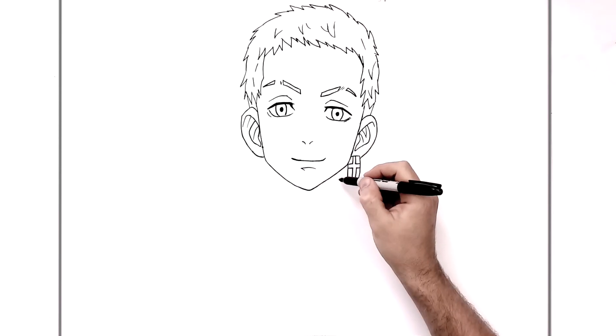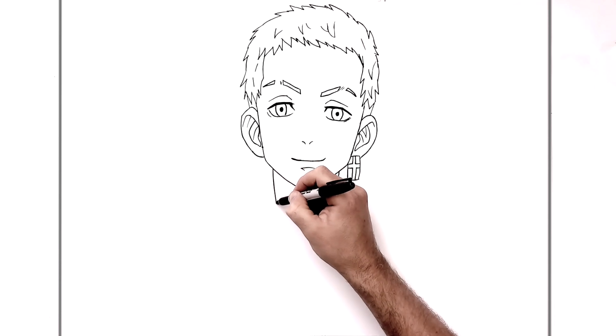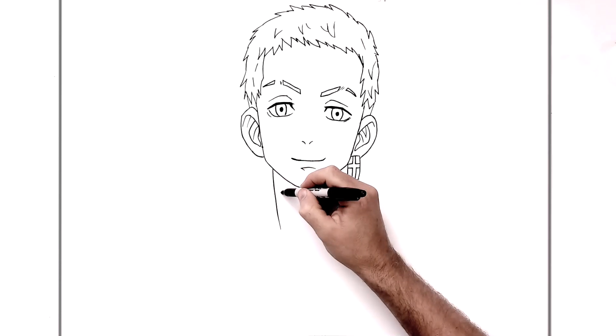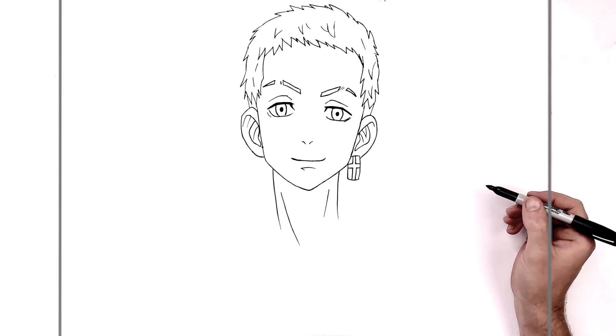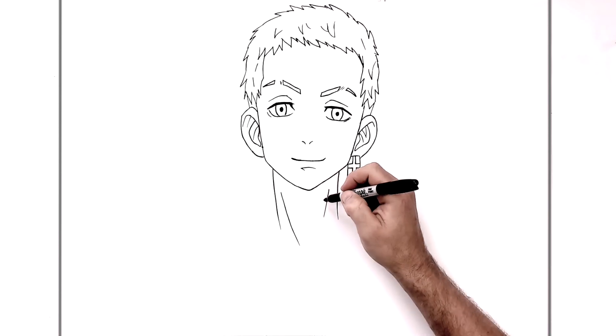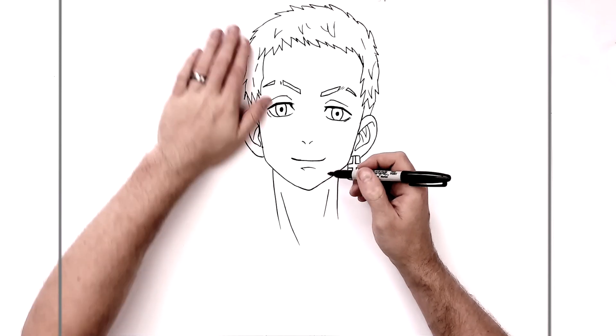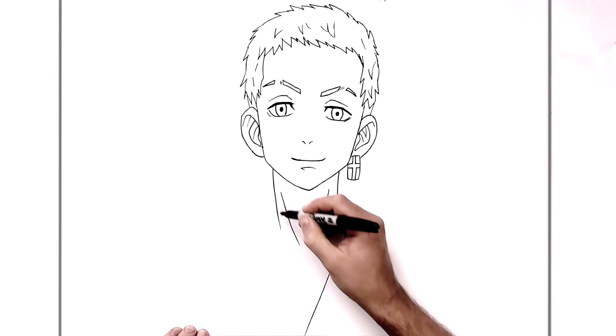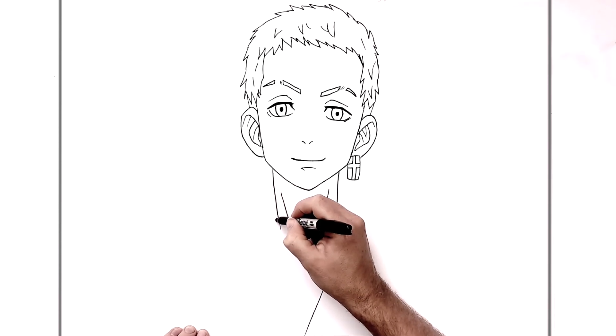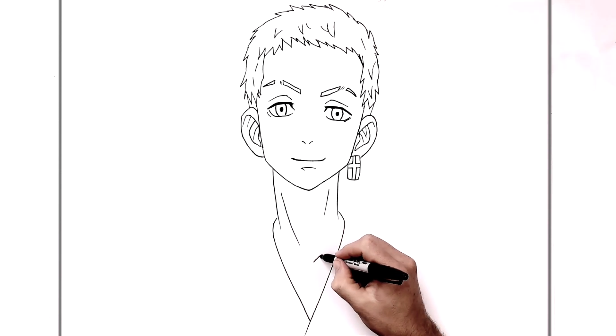Neck. So neck comes down from here, real long. Like so. And then we can have like neck muscle line there, maybe something there.